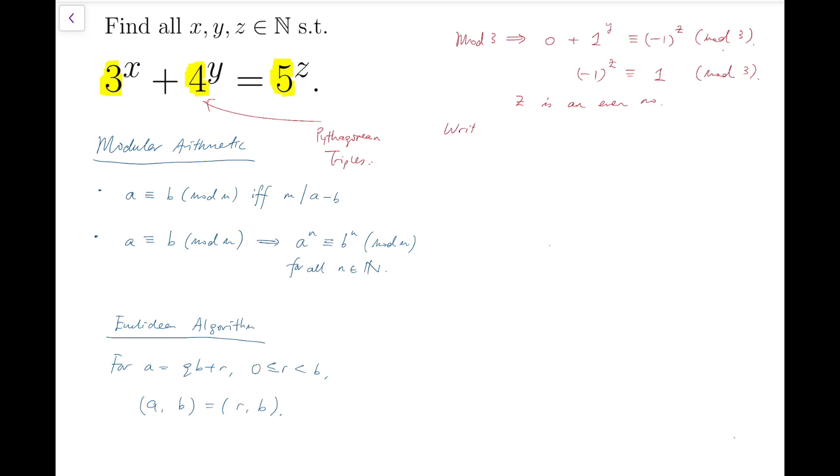Now, because z is even, I can write z to be 2k, some positive integer k. So taking mod on both sides is important because then we can determine at least the parity of our variables.